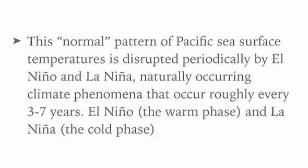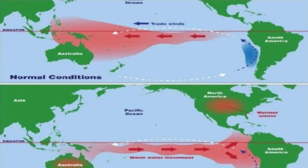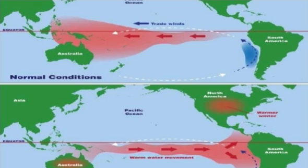El Niño ki wajah se baadh ke karan vishwa ke kuch hisson mein heja, dengue aur malaria ke mamlon mein vriddhi hoti hai. Wohin sookhe ki karan janglon mein aag ki ghatnaon mein bhi vriddhi ho sakti hai, jo shvaasan sambandhi samasya se sambandhit hai.